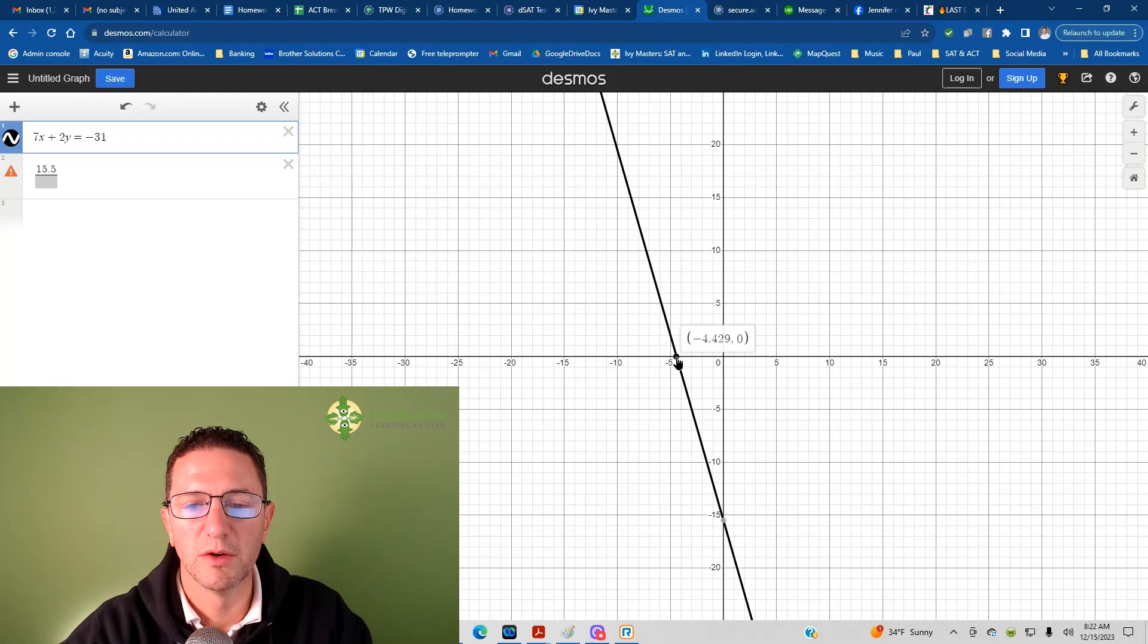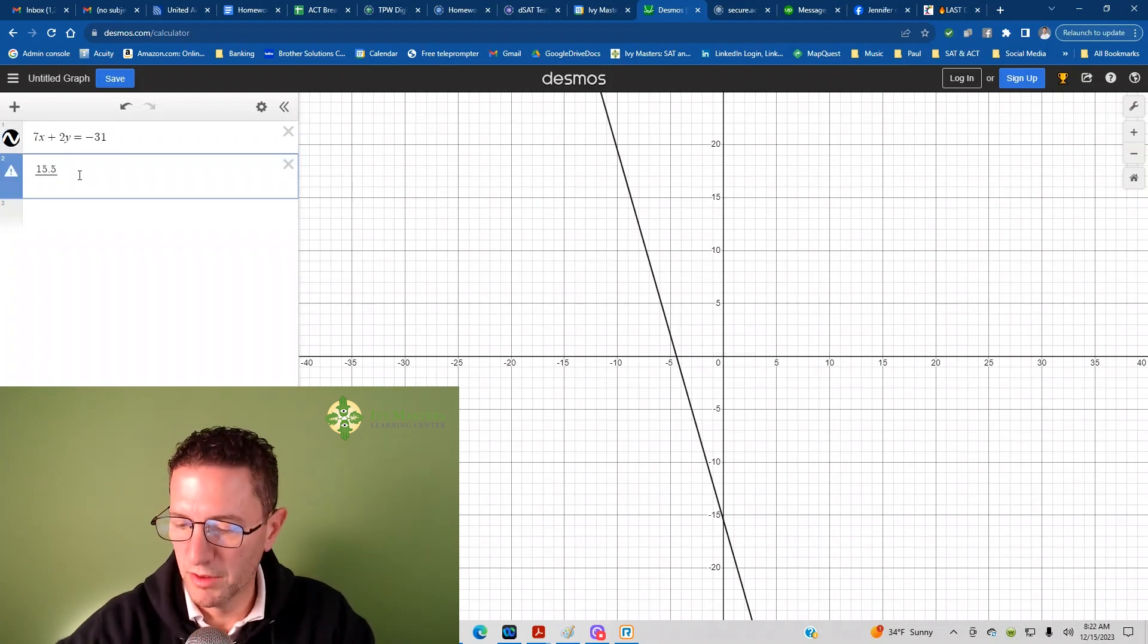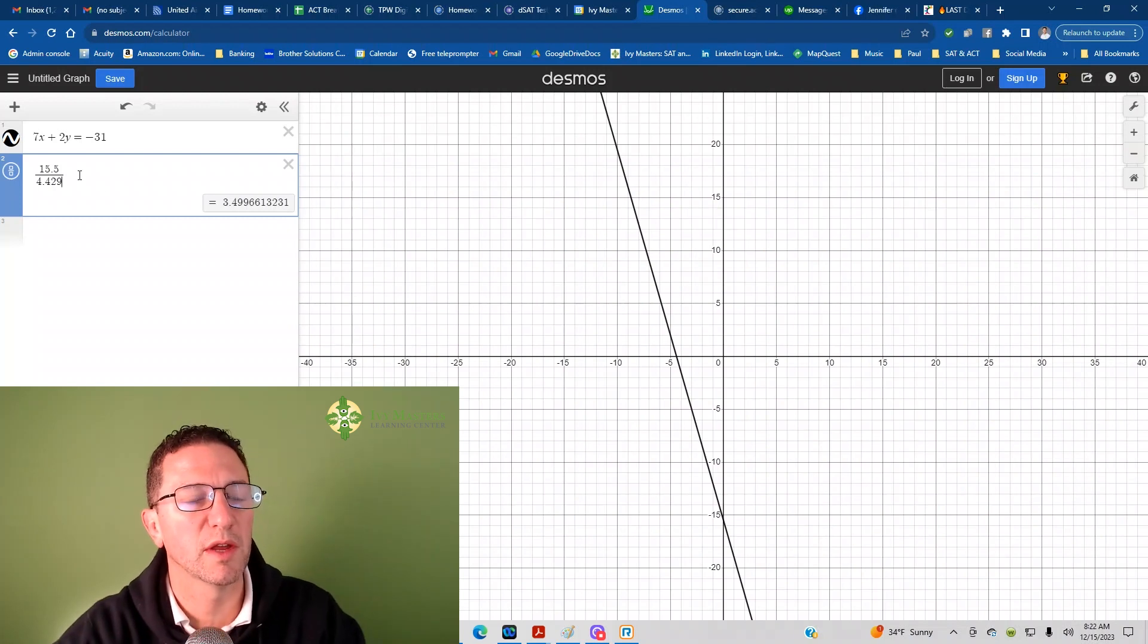Then I'm looking at, boom, there's my x-intercept, negative 4.429. So down below, I put 4.429. Again, positive.